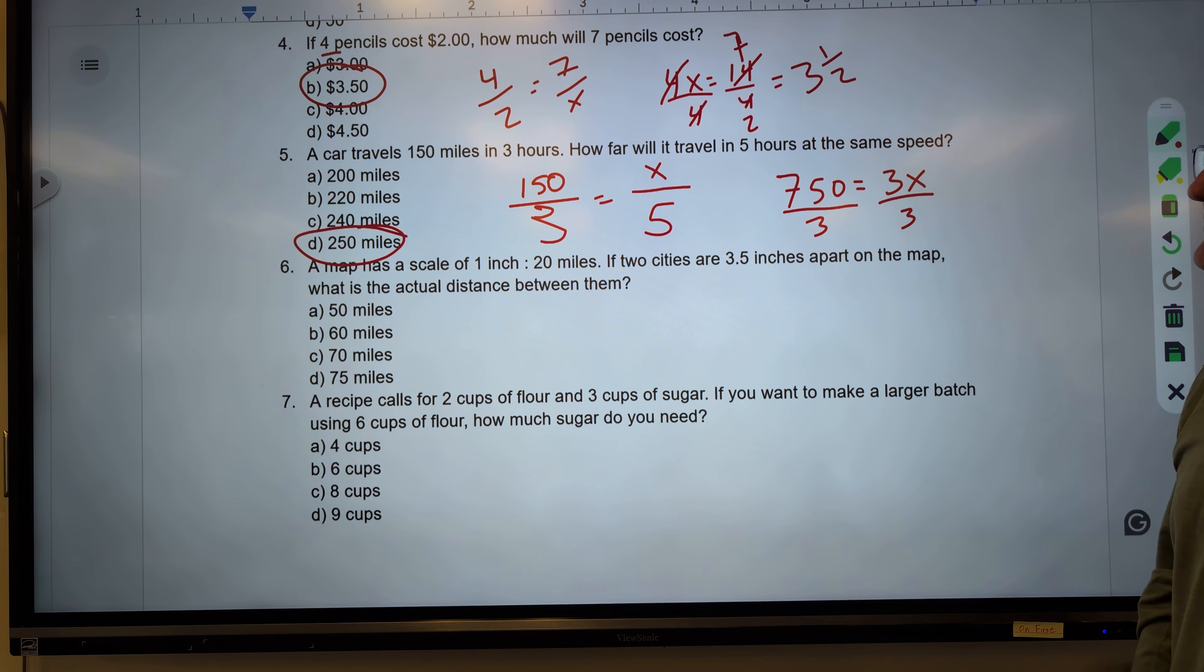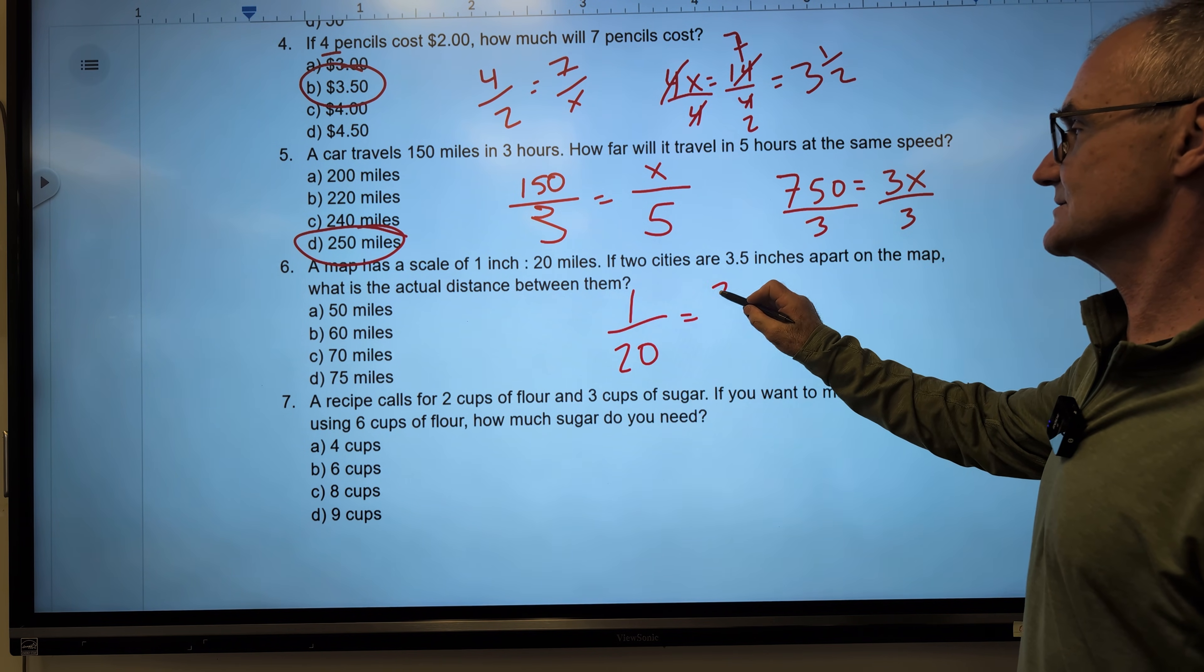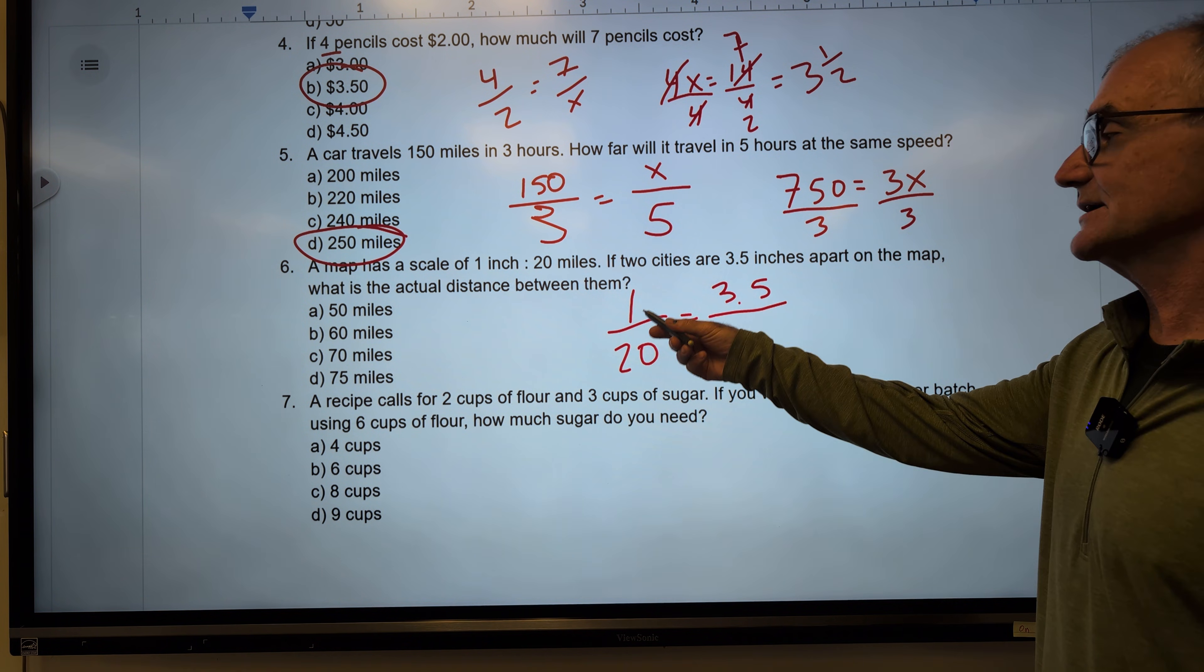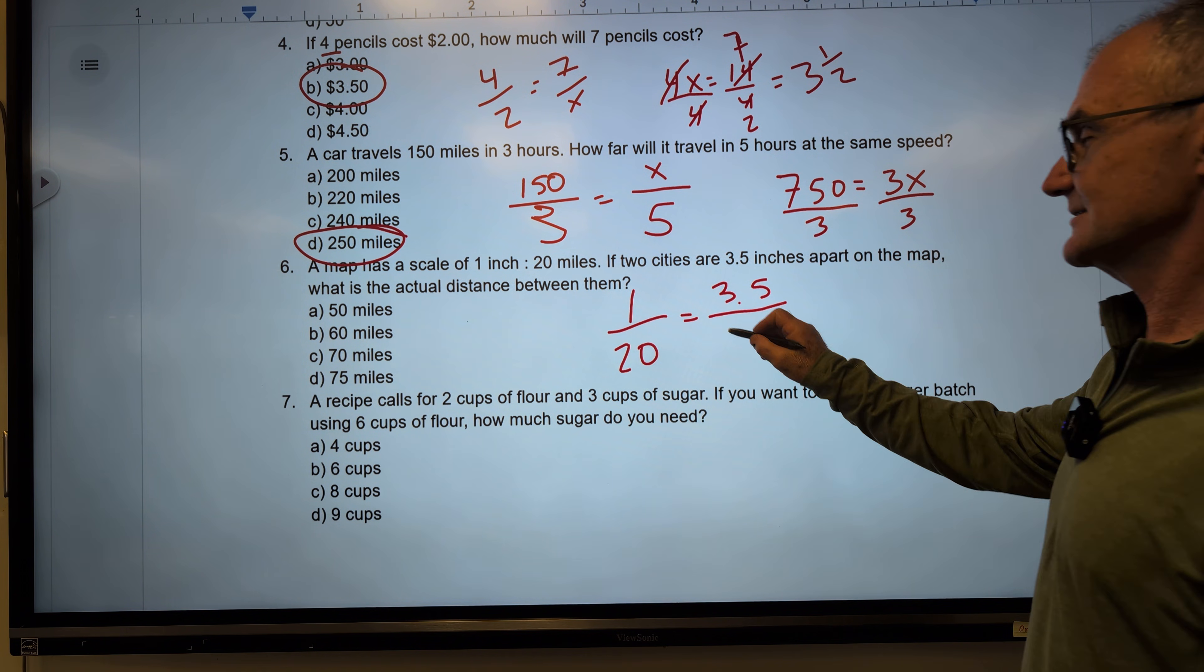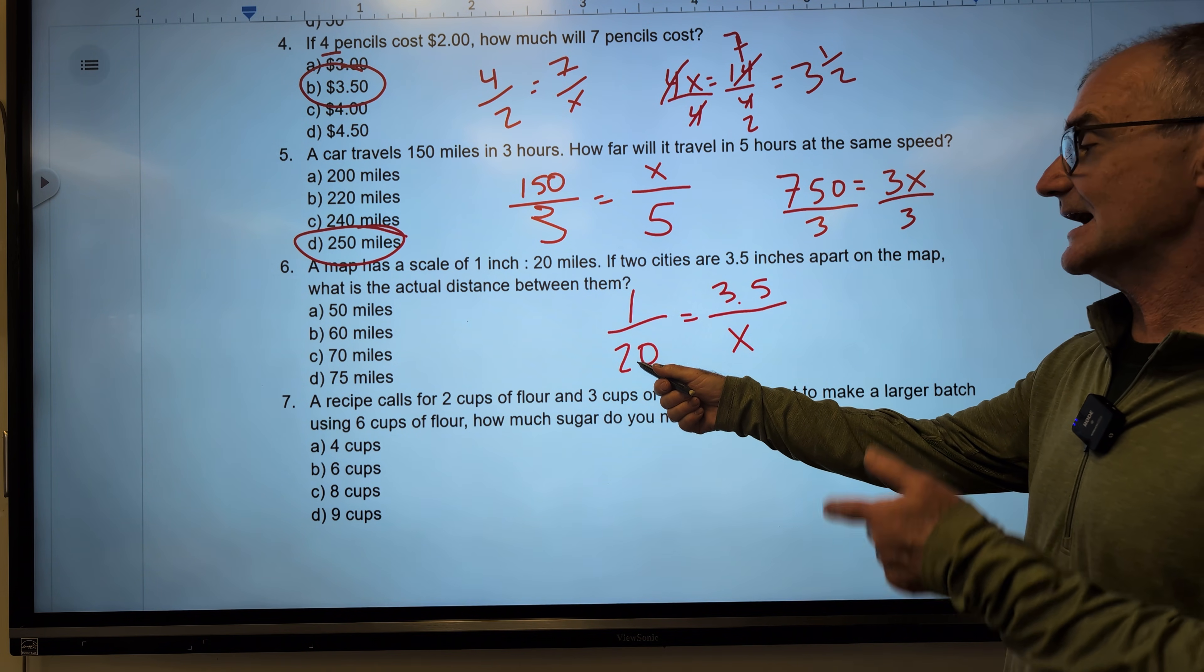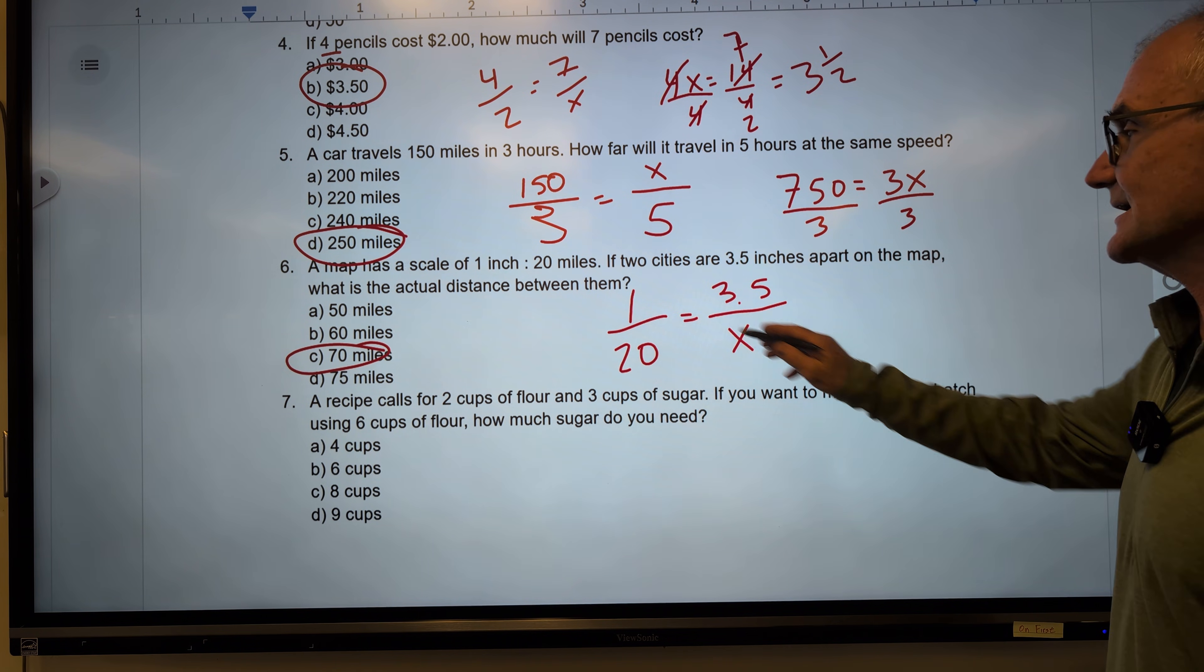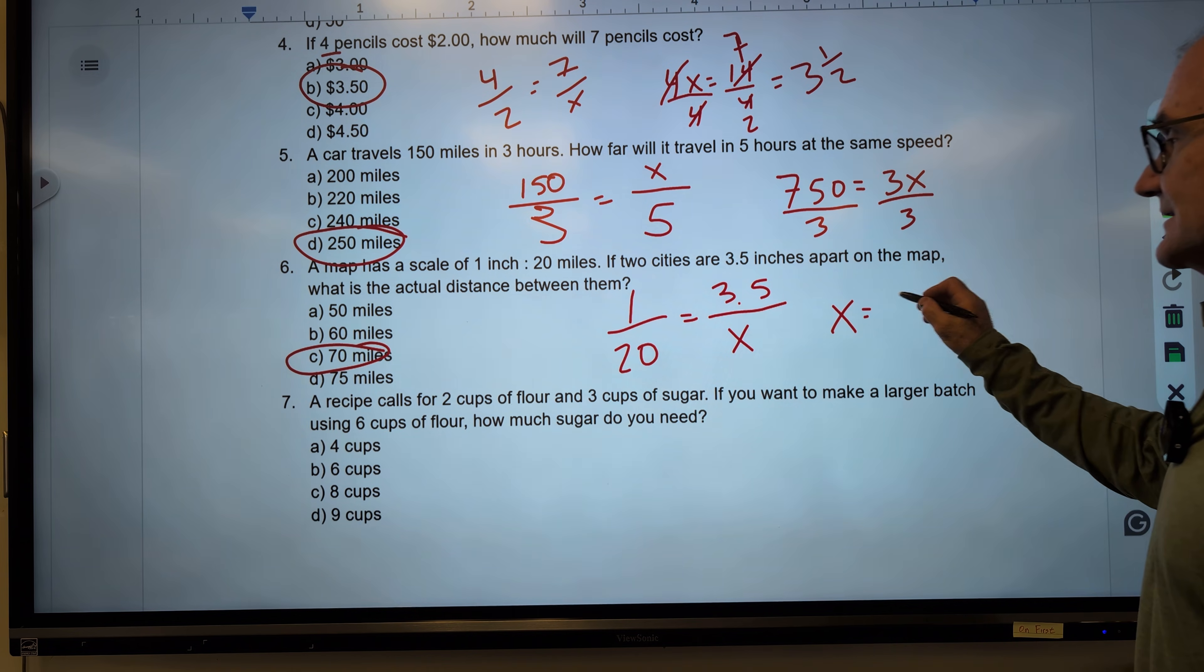There's a scale problem. Map has a scale of 1 inch to 20 miles. Two cities are 3 and a half inches apart. How many miles are the actual distance? Well, I could just do 1 times 3 and a half puts me here. 20 times 3 and a half. I could do that. 20 times 3 is 60. And then a half would be half of that 10, so it would be 70. Correct answer, Answer C. Or you could cross multiply to see that 1x is equal to 3 and a half. Well, 3 and a half times 20 is 70.